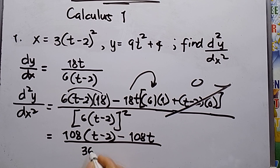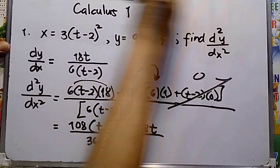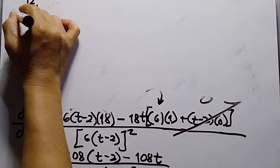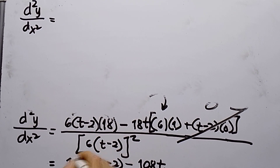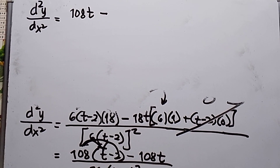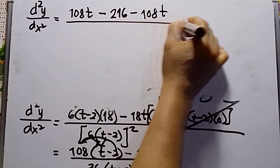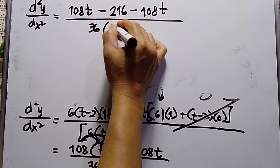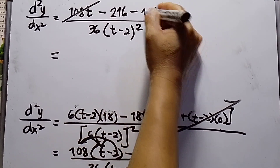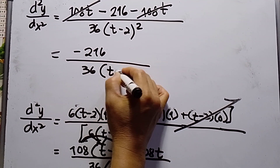6 squared is 36, so the denominator is 36 times (t minus 2) squared. Distributing 108(t minus 2) gives 108t minus 216, and subtracting 108t leaves negative 216. So d²y over dx² at this stage equals negative 216 over 36(t minus 2) squared.